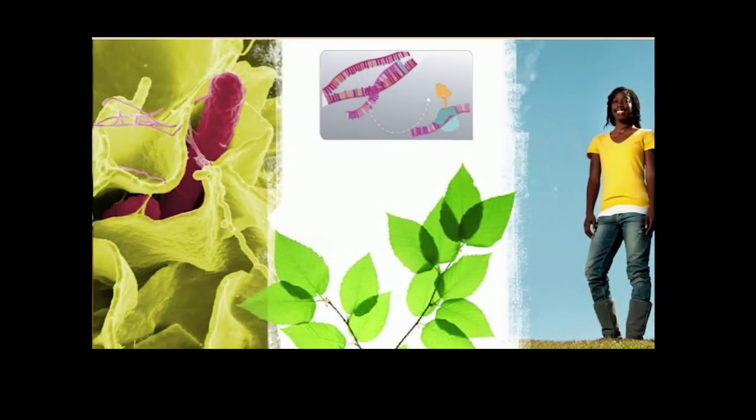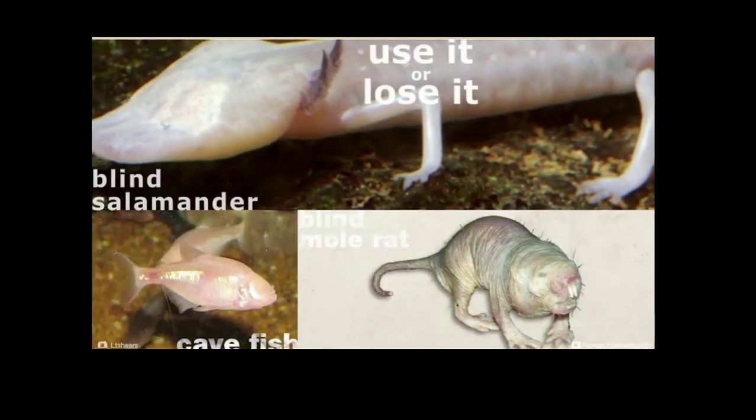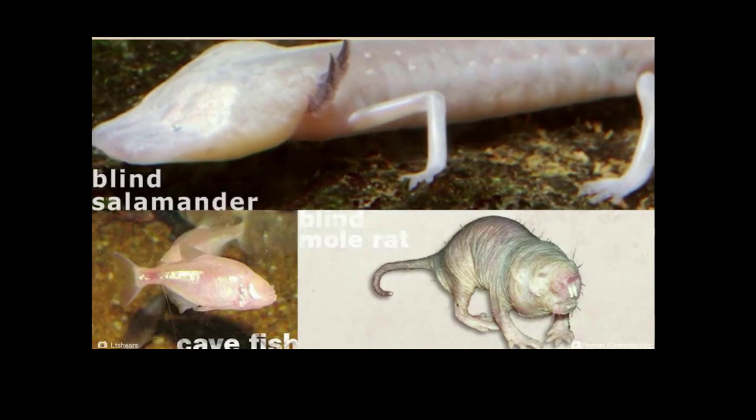Natural selection maintains traits that are necessary for survival by eliminating harmful mutations from the gene pool. Species as diverse as bacteria, plants, and humans share about 500 genes that have been preserved over billions of years of evolution. These genes control basic life functions including DNA replication, transcription, and translation.